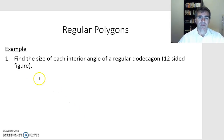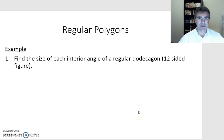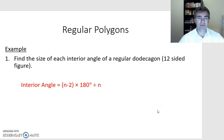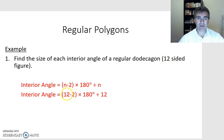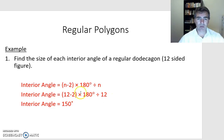Example: find the size of each interior angle of a regular dodecagon — a 12-sided figure, the same shape as a 50-cent piece. Write the rule, substitute what we know: number of sides is 12. Using the calculator, (12 − 2) × 180 ÷ 12 = 150 degrees. So each interior angle of a 12-sided figure is 150 degrees.